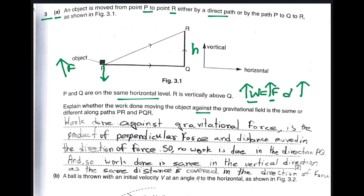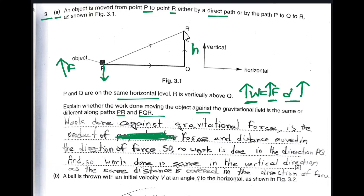So the distance is also upwards. We need to find the work done that is upward — the force that is upward and the distance that is upward — along path QR, PR, and PQR. Work done against gravitational force means the upward force and the distance moved upward by the object.